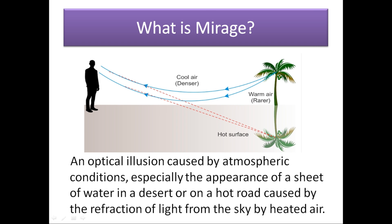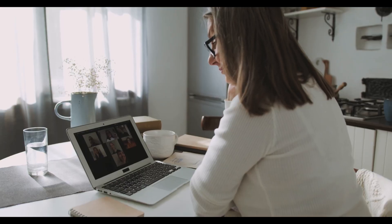Our next question is: what is a mirage? A mirage is an optical illusion caused by atmospheric conditions — especially the appearance of a sheet of water in a desert or on a hot road — caused by the refraction of light from the sky by heated air.